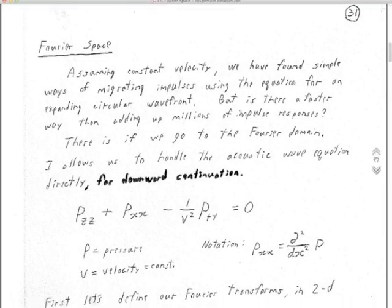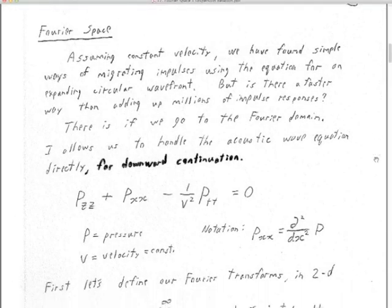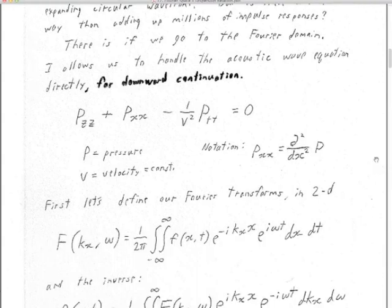We are now on page 31 of notes number 17, and we're going to get into the nitty-gritty. We've had a lot of introduction here, and there's lots more equations to come, so it's time to get a move on. I wanted to introduce the acoustic scalar wave equation for two dimensions, which is how we will accomplish the downward continuation that we need to do.